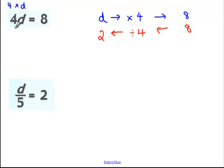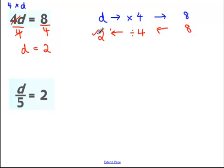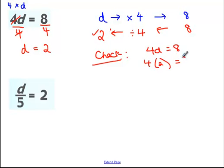Writing that algebraically: the opposite of multiplying by 4 is dividing by 4, and we show division using fractions in algebra. Dividing both sides by 4 gives 4d divided by 4 equals 1d, and 8 divided by 4 equals 2, so d equals 2. To check: substitute d equals 2 back into 4d equals 8 — 4 times 2 is 8, and 8 equals 8. Correct.